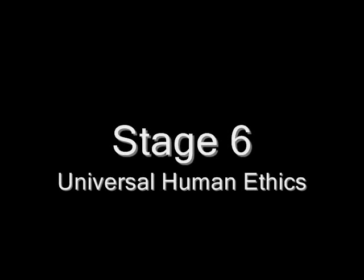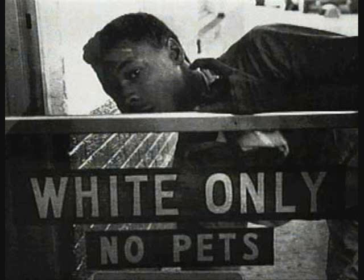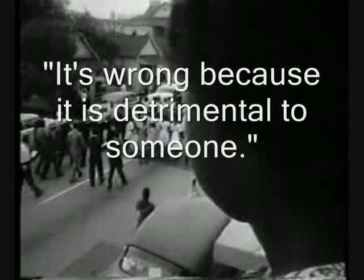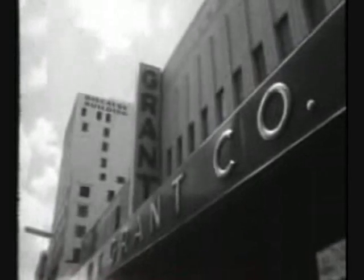Stage 6: Universal Human Ethics. A law is only valid if said law is grounded in justice. If a law is unjust, there is a moral obligation to disregard that law when applicable. Even social contracts are not necessarily good if they do not coincide with what the stage 6 individual's conscience dictates. Right and wrong is reasoned by an entirely internal guide. The democratic process does not always lead to the moral decision, as a majority may create an immoral law.